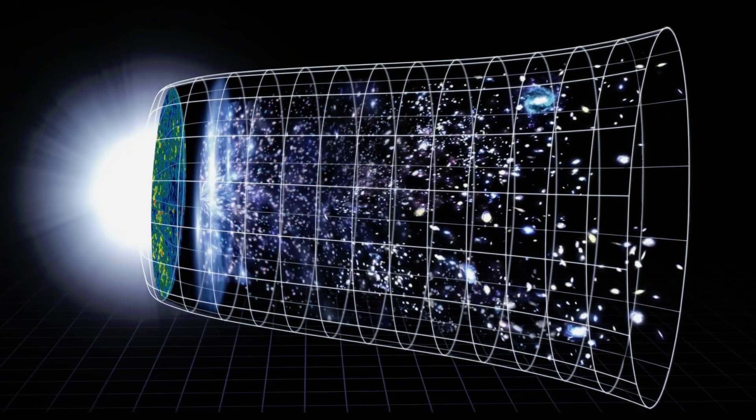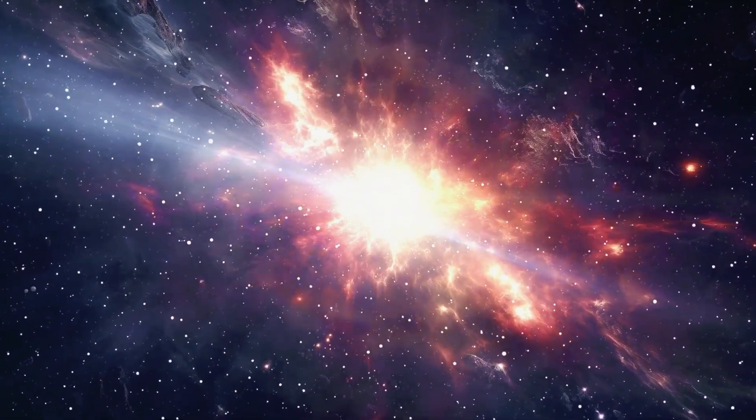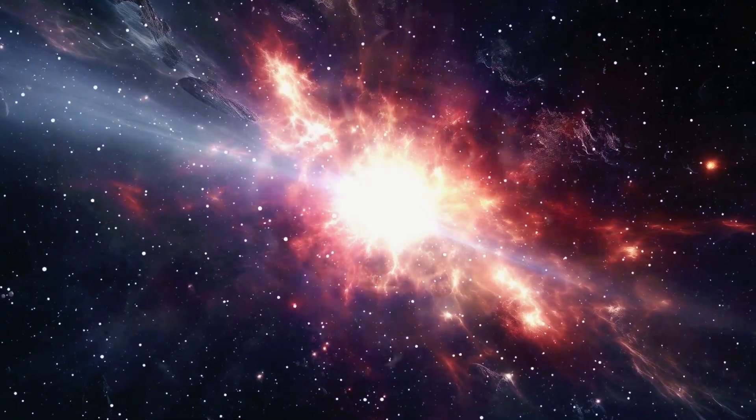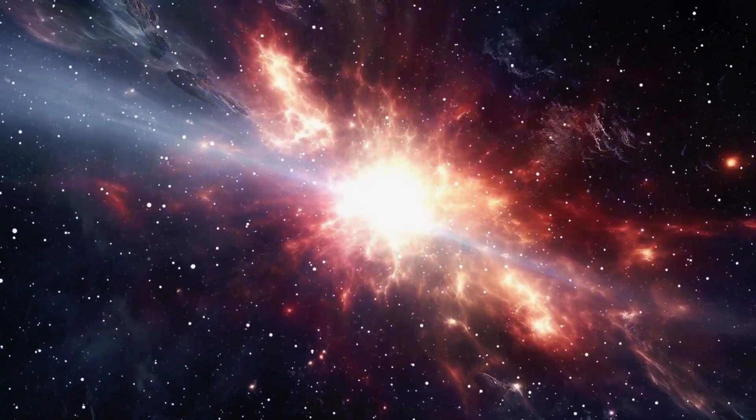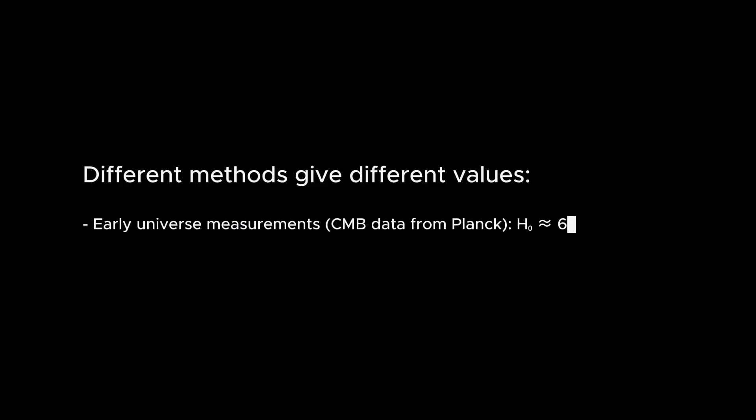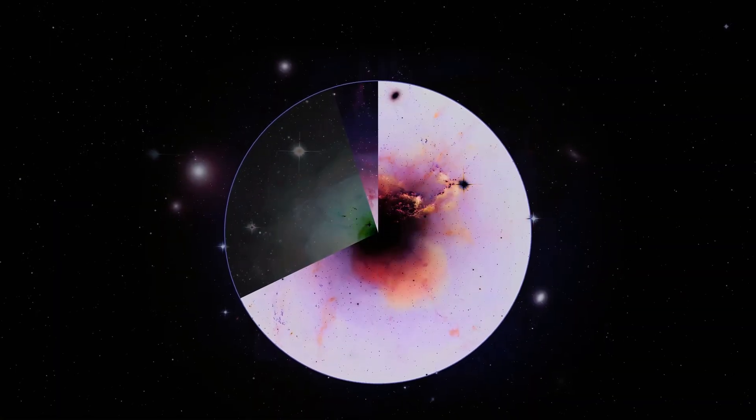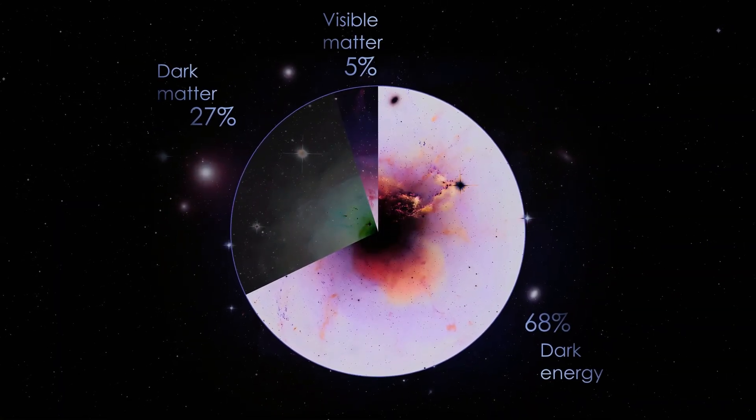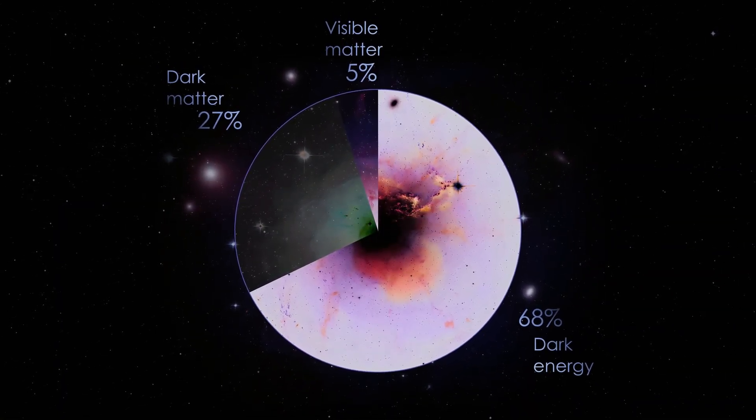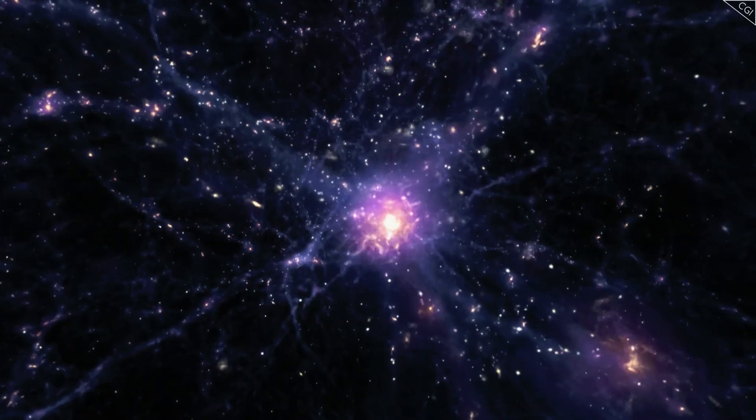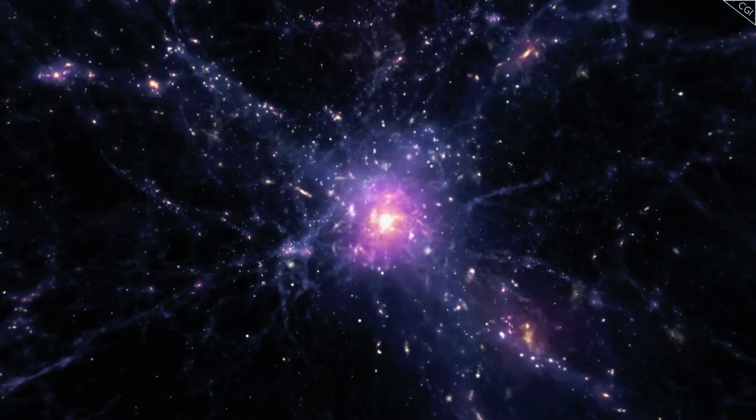The expansion of the universe, once thought to follow a predictable pattern, now seems off. The Hubble constant, used to measure the universe's rate of expansion, varies more than expected. The numbers don't add up. What's causing this inconsistency? Is it dark energy? Dark matter? Or something else entirely?